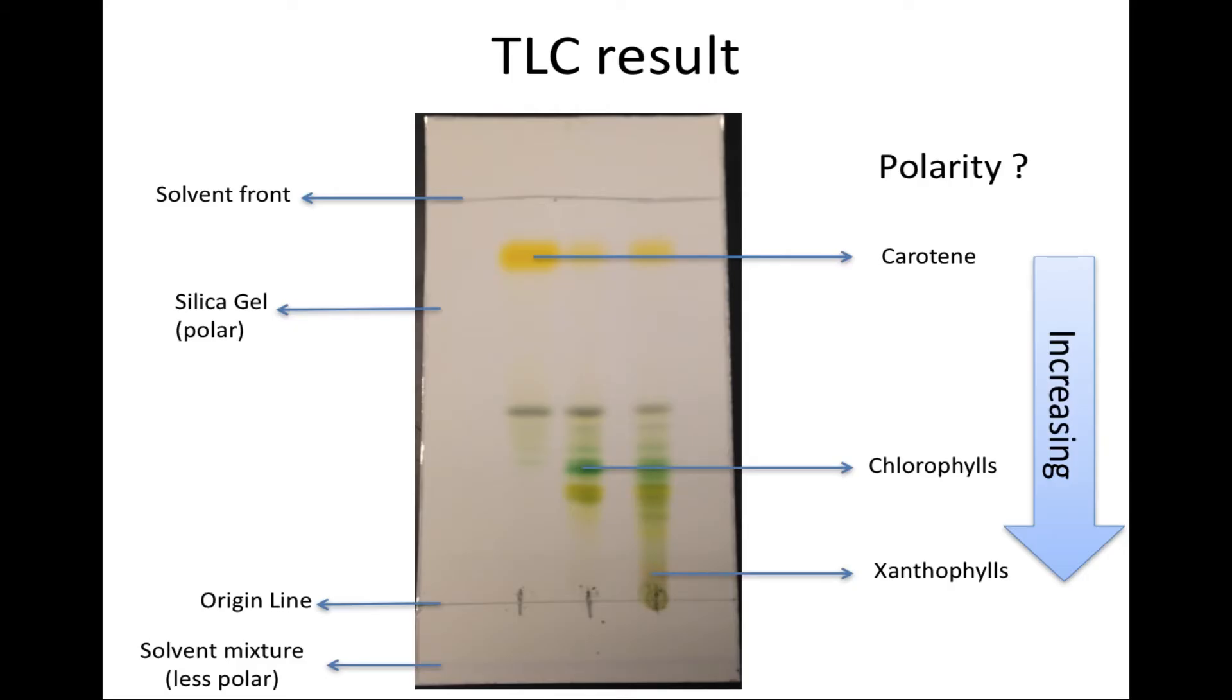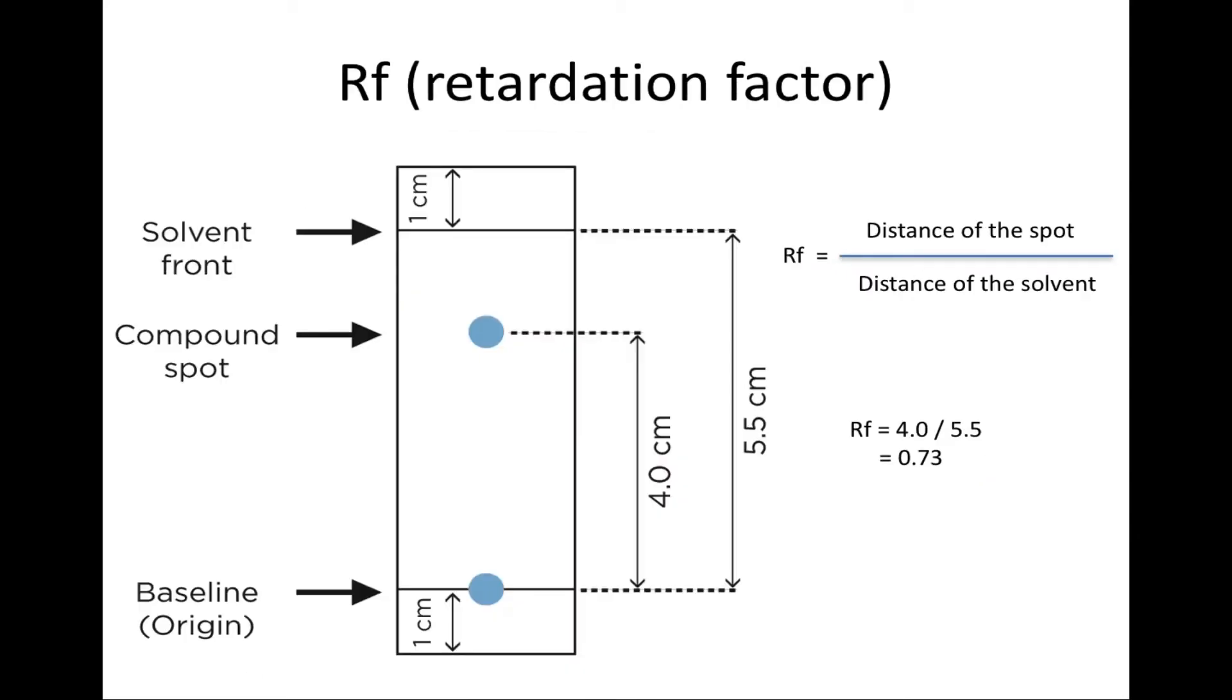Since carotenes are the least polar, the carotenes spot is the yellow spot that is furthest from the origin line. The green chlorophylls are shown in the middle on the plate, and the yellow spots closer to the origin line are xanthophylls, which are the most polar among the pigments.